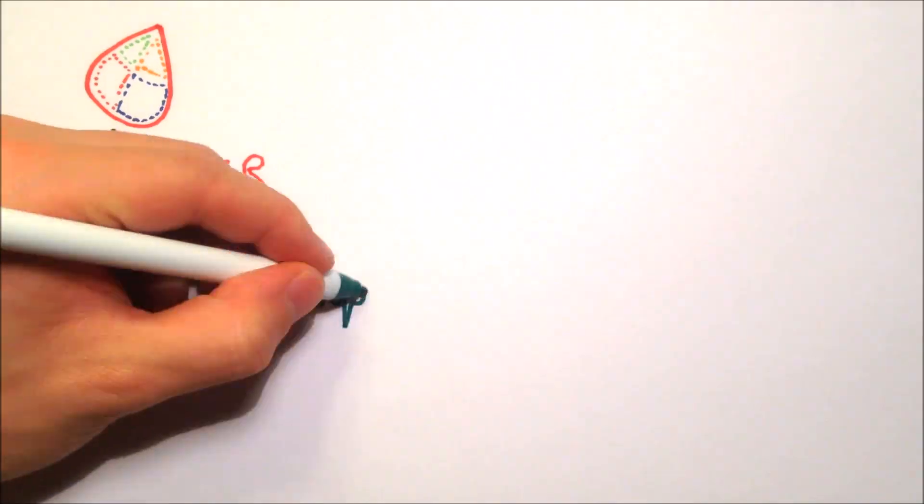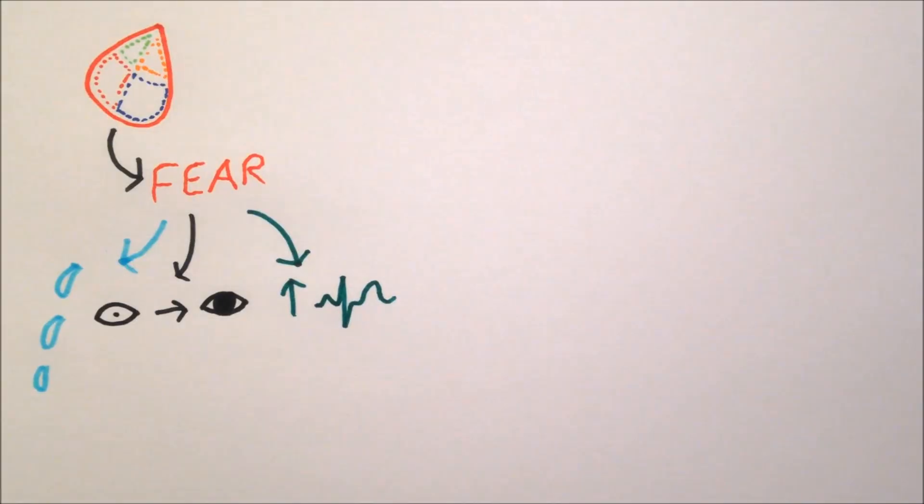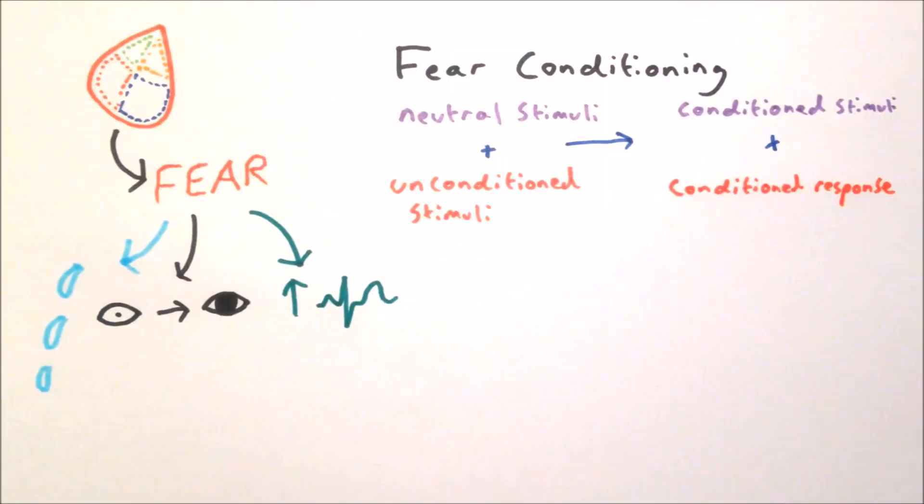In conclusion, we can see that the amygdala is a cluster of nuclei within the brain, which produces many of the physiological aspects of fear. The amygdala also plays a key role in helping us learn what to fear, and the best studied example of this is fear conditioning.